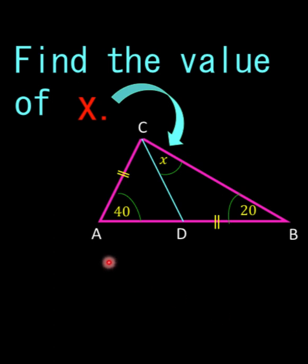We are given this pink triangle ABC and a line segment CD drawn from vertex C intersecting side AB. It is given that side AC is congruent to side BD.